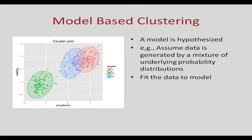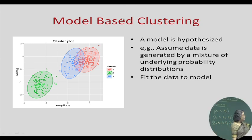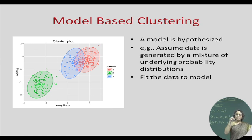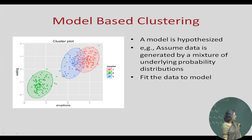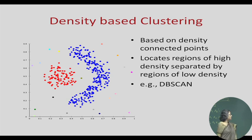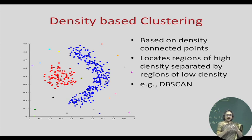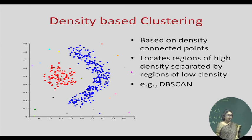A third type is model-based clustering, where given the data points you hypothesize a model. For example, you can think of each cluster as being represented by a Gaussian distribution with a mean and a standard deviation, and you try to fit the data to the model. A fourth type is density-based clustering, based on the density of a region — the number of instances in a region in feature space. It locates regions of high density and connects those points together. DBSCAN is a popular density-based clustering algorithm.